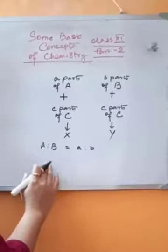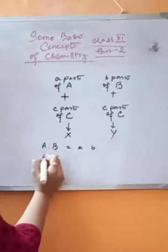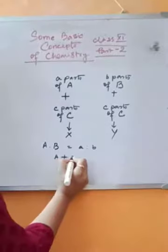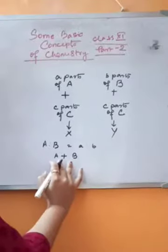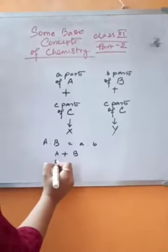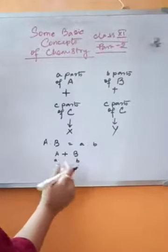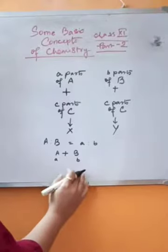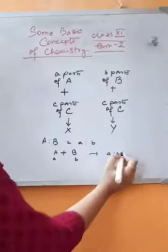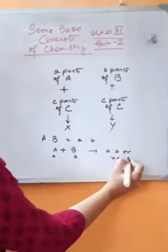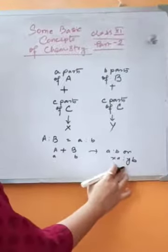Now according to this law, it states that if elements A and B separately together combine with each other, where I have taken A parts by mass of A and B parts by mass, then the ratio of their masses will either be A is to B or XA is to YB, where X and Y are two simple whole numbers.